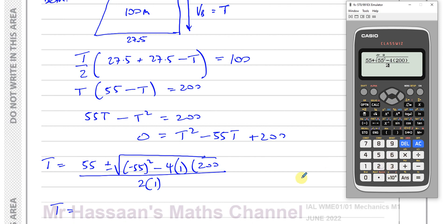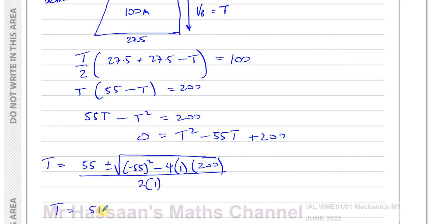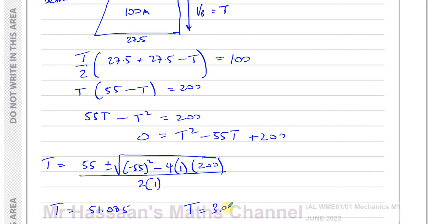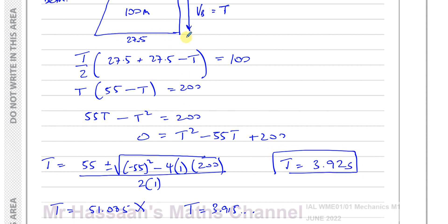Evaluating: T = (55 ± 5√89) / 2. This gives two solutions: approximately 51.085 and 3.915. The value 51.085 doesn't make sense since the total race time is only 27.5 seconds. So T = 3.92 seconds (to 3 s.f.). Quadratics often yield two solutions, and here one doesn't fit the physical context.